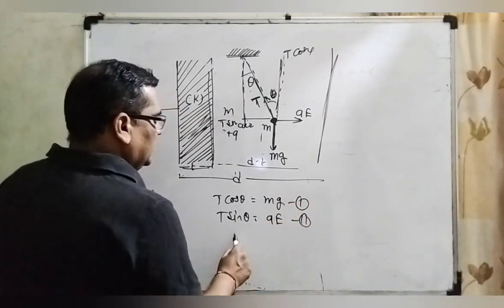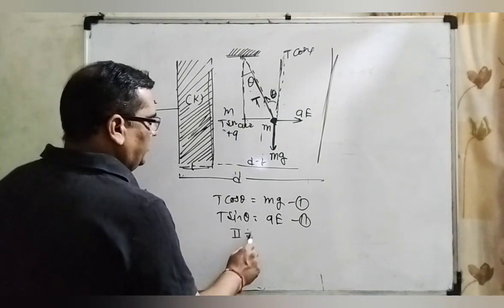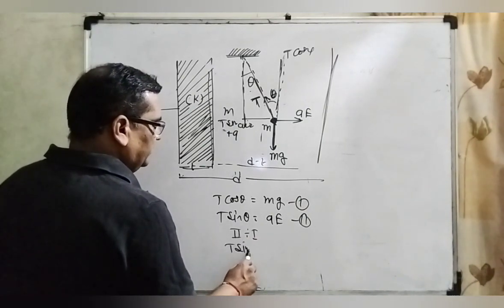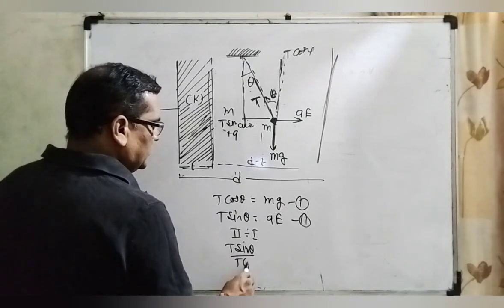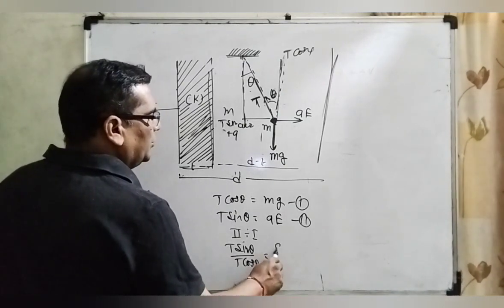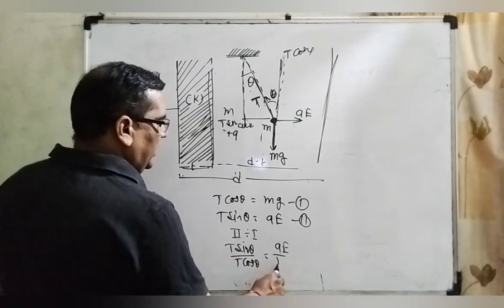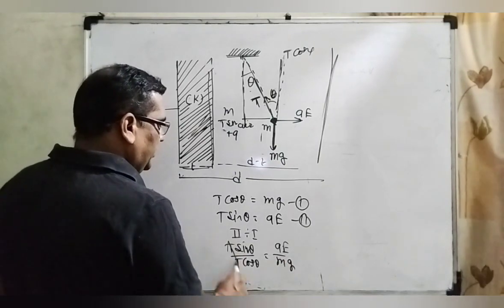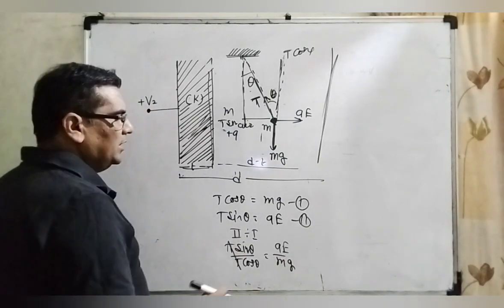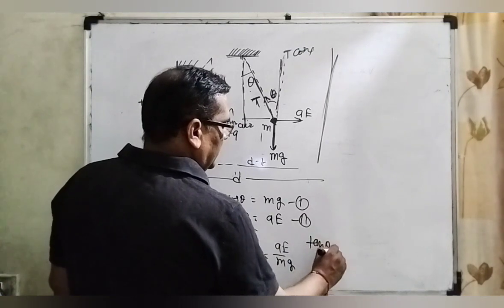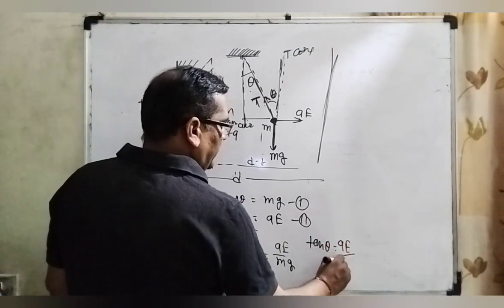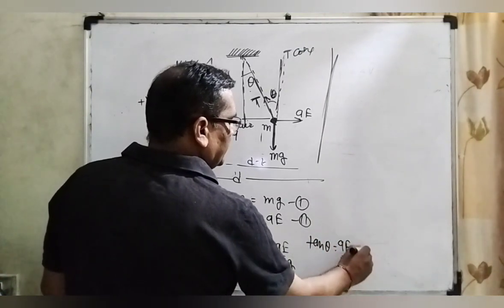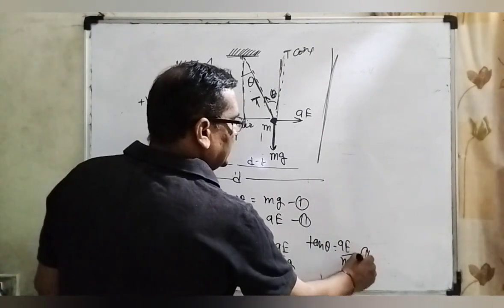Then second equation divided by first equation, then T sin theta upon T cos theta equal to QE by mg. T cancels, sin theta upon cos theta is tan theta equal to QE upon mg. It is equation number three.